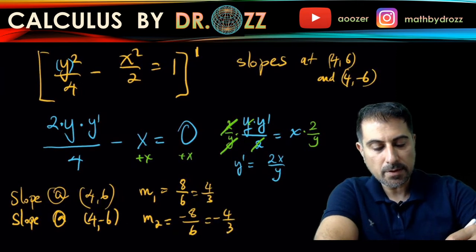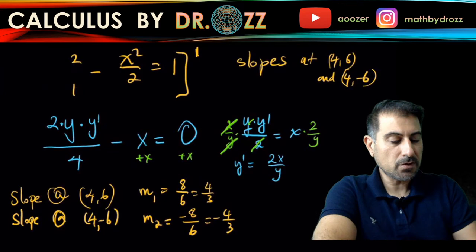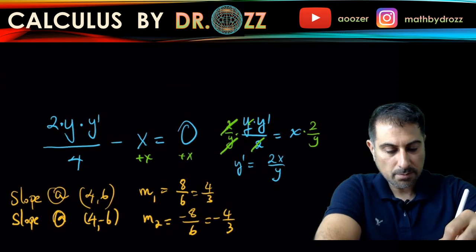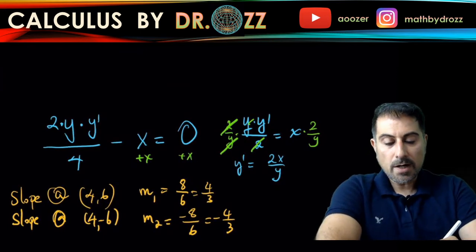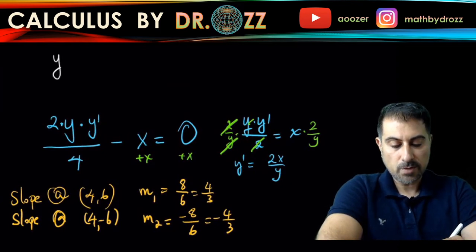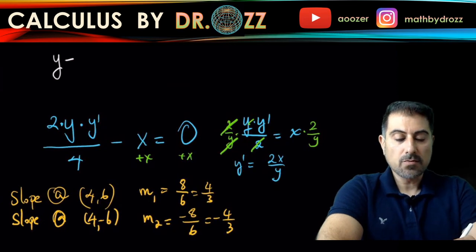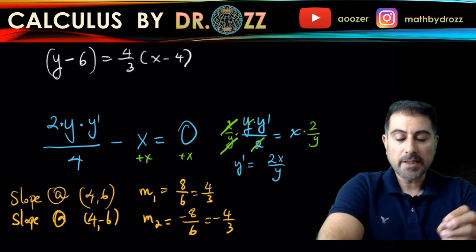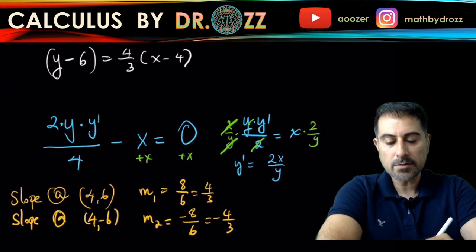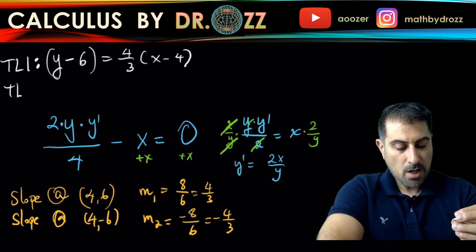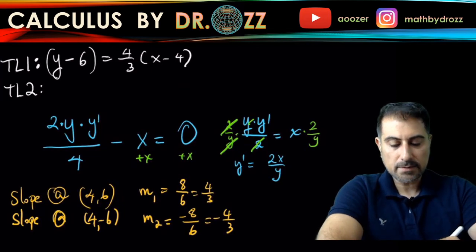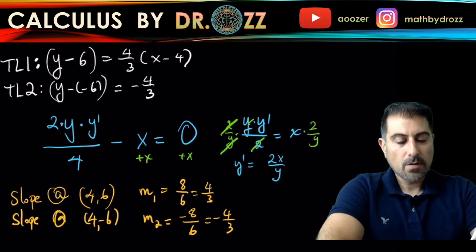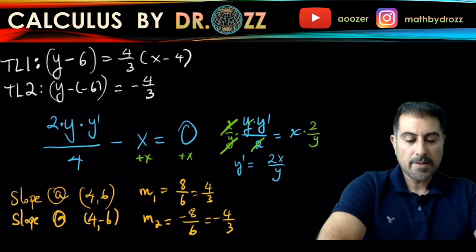Now I'll write the equations of the tangent lines using point-slope form. Tangent line 1 at (4, 6): y minus 6 equals (4/3)(x minus 4). Tangent line 2 at (4, -6): y minus (-6) equals (-4/3)(x minus 4).